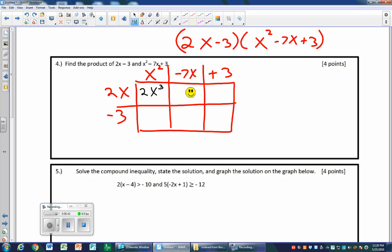Remember, x times x² is x³. And then in this blank here, we do 2x times negative 7x, which is minus 14x². The next one is 3 times 2x, which is 6x. Then we go to this row. Negative 3 times x² is negative 3x². Negative 7 times negative 3 is 21x. Don't forget the variable. 3 times negative 3 is negative 9. Now you can always combine the ones on diagonal: 2x³ minus 17x² plus 27x minus 9.